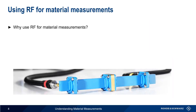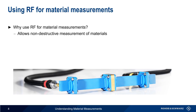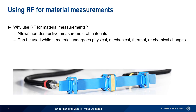Using RF for material measurements has a number of important advantages. First, and perhaps most importantly, it allows for non-destructive testing of materials. In many cases, we'd like to obtain information about a material without destroying it in the process. Another important reason is that RF allows material measurements to be made while the material is undergoing physical, mechanical, thermal, or chemical changes.